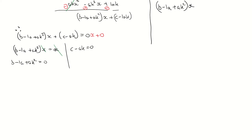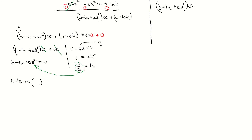Looking back at the target, c squared equals a times a minus b — notice there is no k in that expression, so we need to eliminate k. From c minus ak equals zero, I get c equals ak, and dividing both sides by a gives k equals c over a. I'll substitute this expression for k into the other equation.